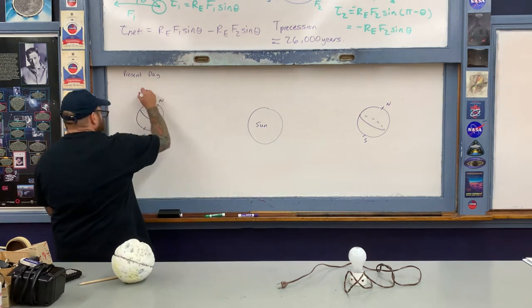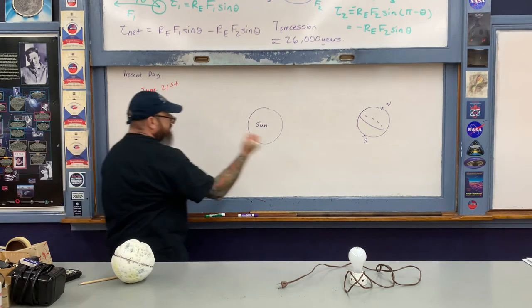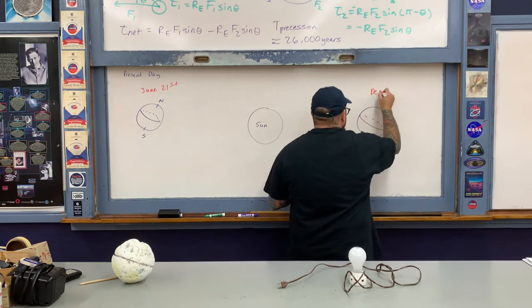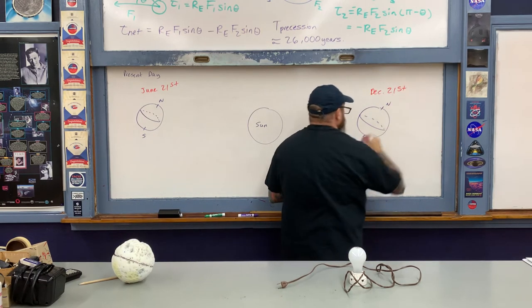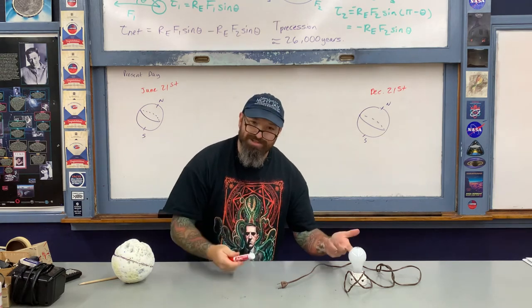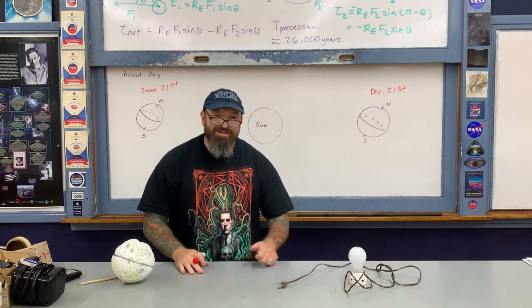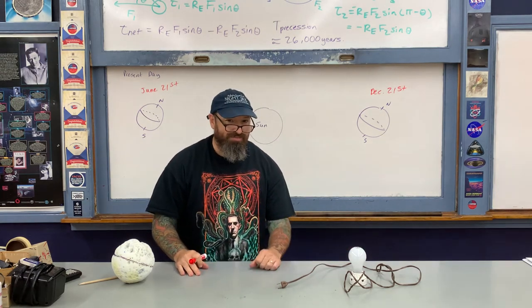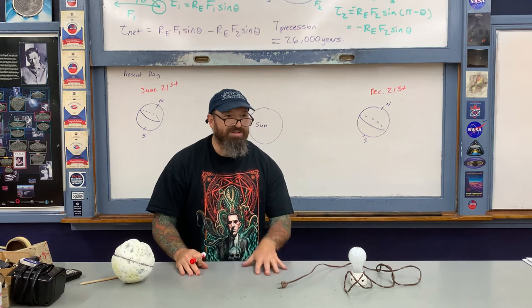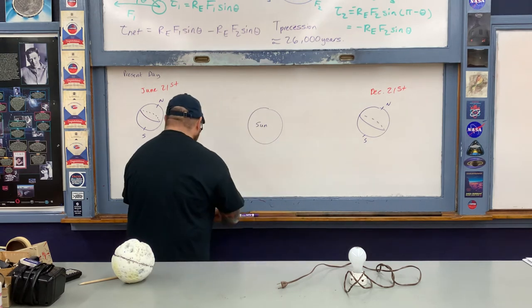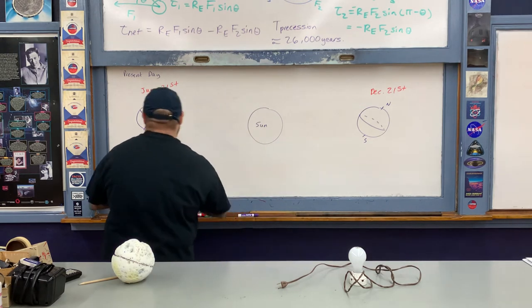On our diagram, June 21st is on one side and December 21st on the other. But remember the earth's axis is precessing — so 13,000 years from now, one half of the precession cycle will have occurred, and the seasons will be reversed.